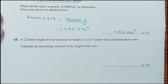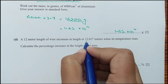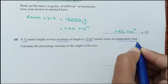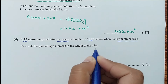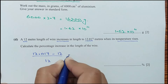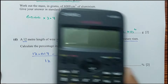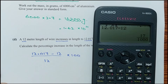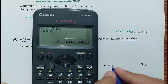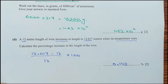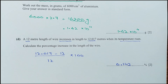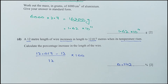Part D: a 12 m wire increases in length to 12.017 m when heated. Calculate the percentage increase. Percentage increase = (12.017 − 12) ÷ 12 × 100 = 0.142%. That was the last question of the paper. If you have any queries please let me know in the comments section and please subscribe to my channel. Thank you for watching, see you next time.